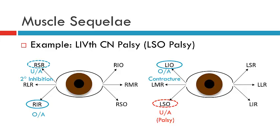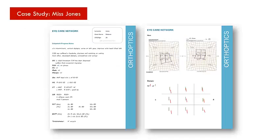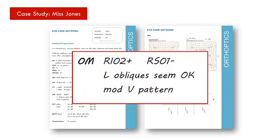Before concluding, I want to come back to Ms. Jones, our case study, and highlight where in the patient notes we would be looking for the muscle sequelae. The ocular movement assessment will be guiding you as to whether a muscle sequelae is present. In Ms. Jones' case, the orthoptist has indicated a right inferior oblique overaction and a right superior oblique underaction — both meeting requirements of the muscle sequelae. It's that documentation of overaction and underaction that supports the possibility this may be a neurogenic palsy. You can never make a diagnosis from a single investigation, so we'll continue to look at Ms. Jones' case notes later when we have a complete picture.